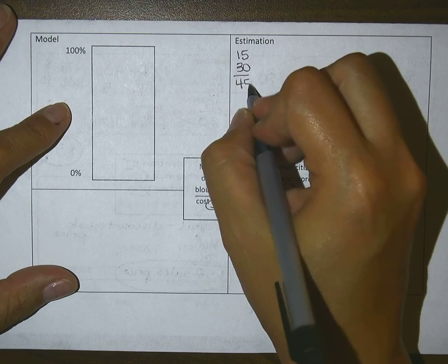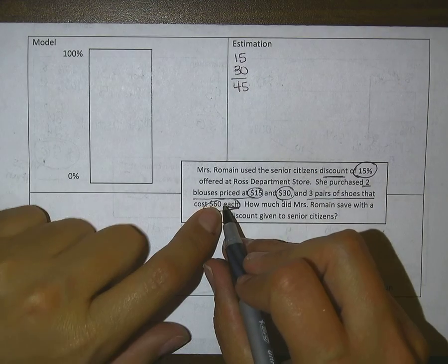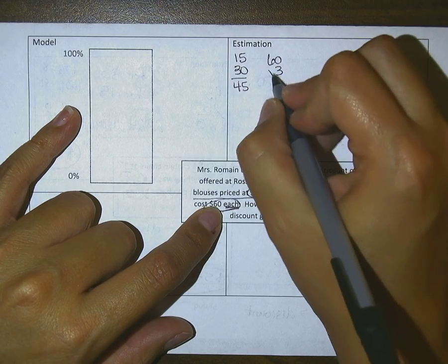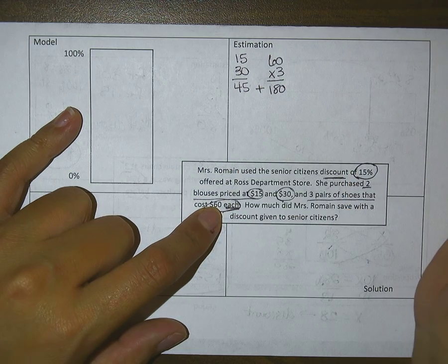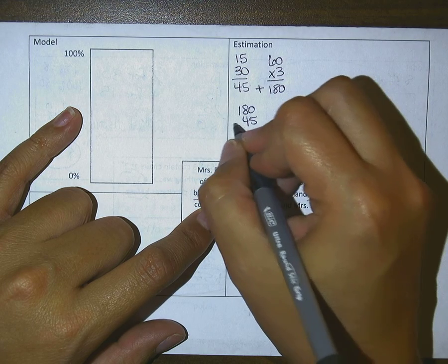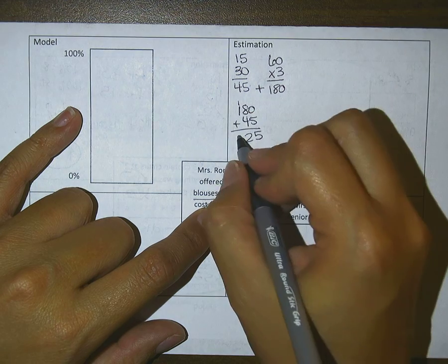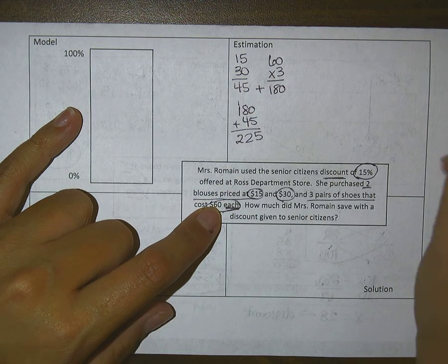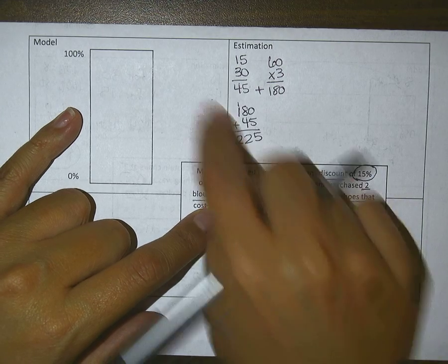Then it says three pairs of shoes that cost $60 each, so $60 times 3 makes $180. Then I'm going to go ahead and add these together. $180 and $45 is $225.